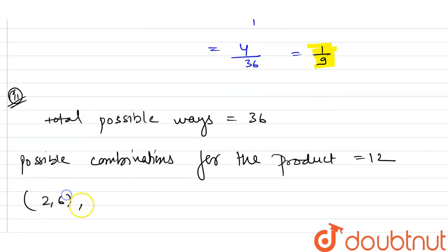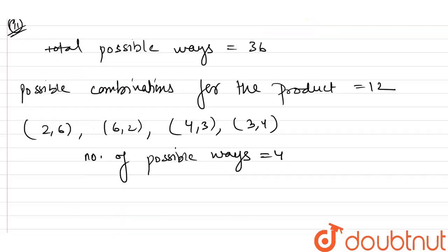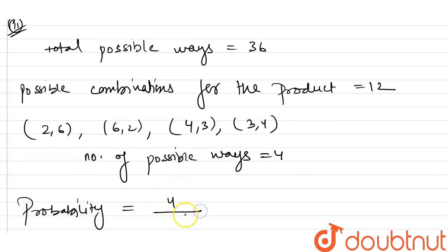The possible combinations for product = 12 are (2,6) or (6,2), and (3,4) or (4,3). So the number of possible ways is 4. Therefore, probability = 4/36, which also equals 1/9. The probability that the product of the numbers on the top of the two dice is 12 is 1/9.